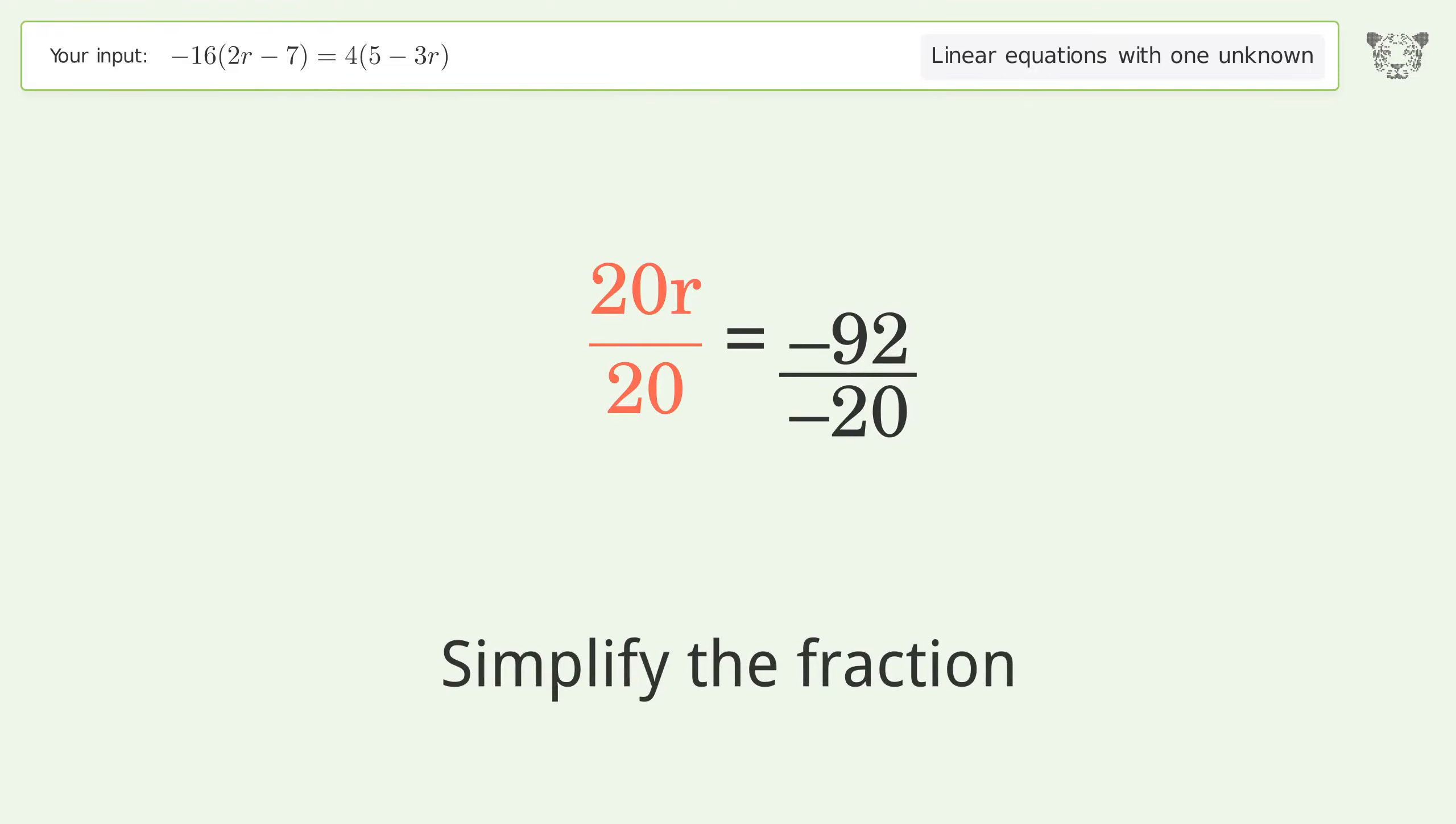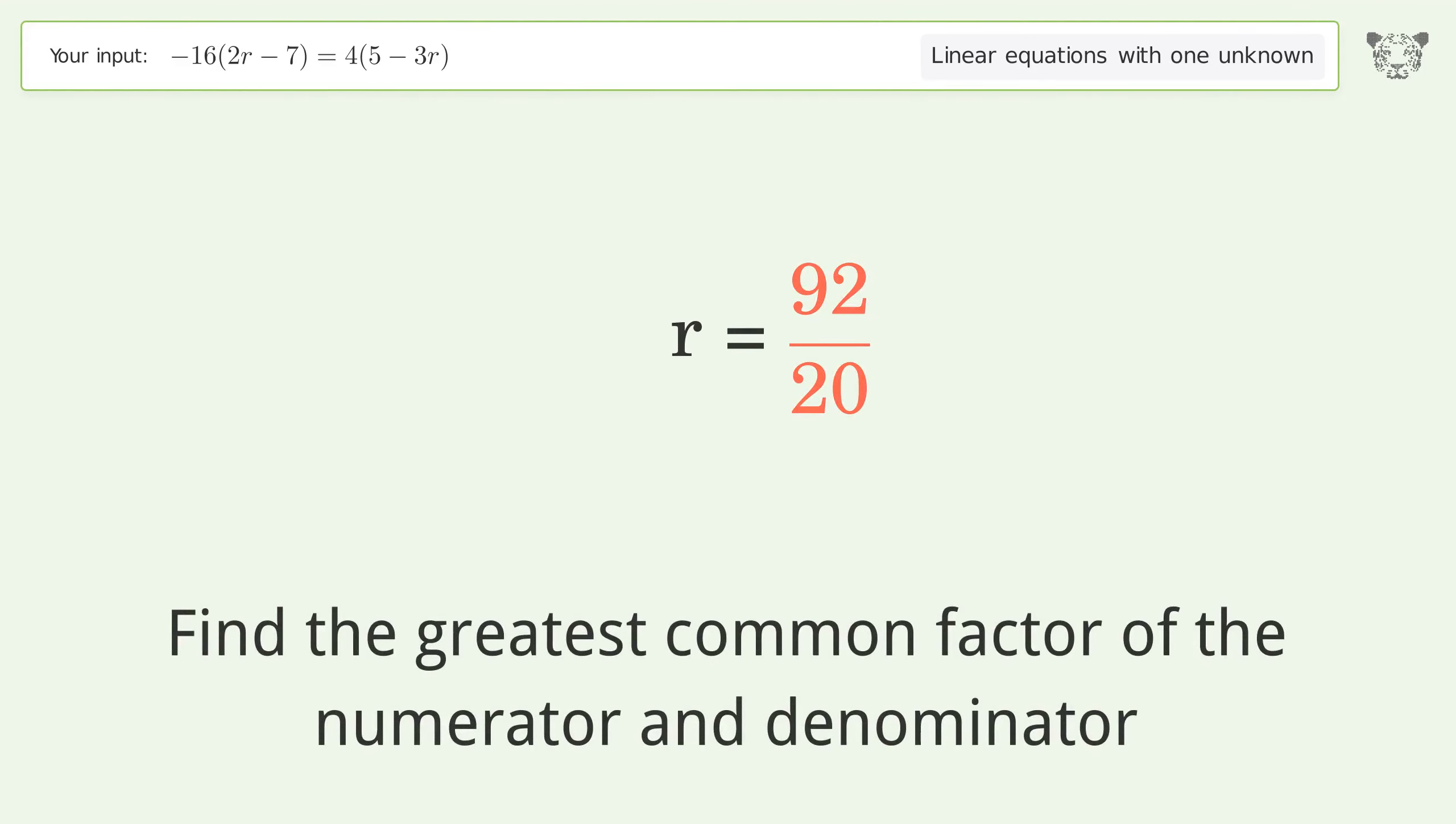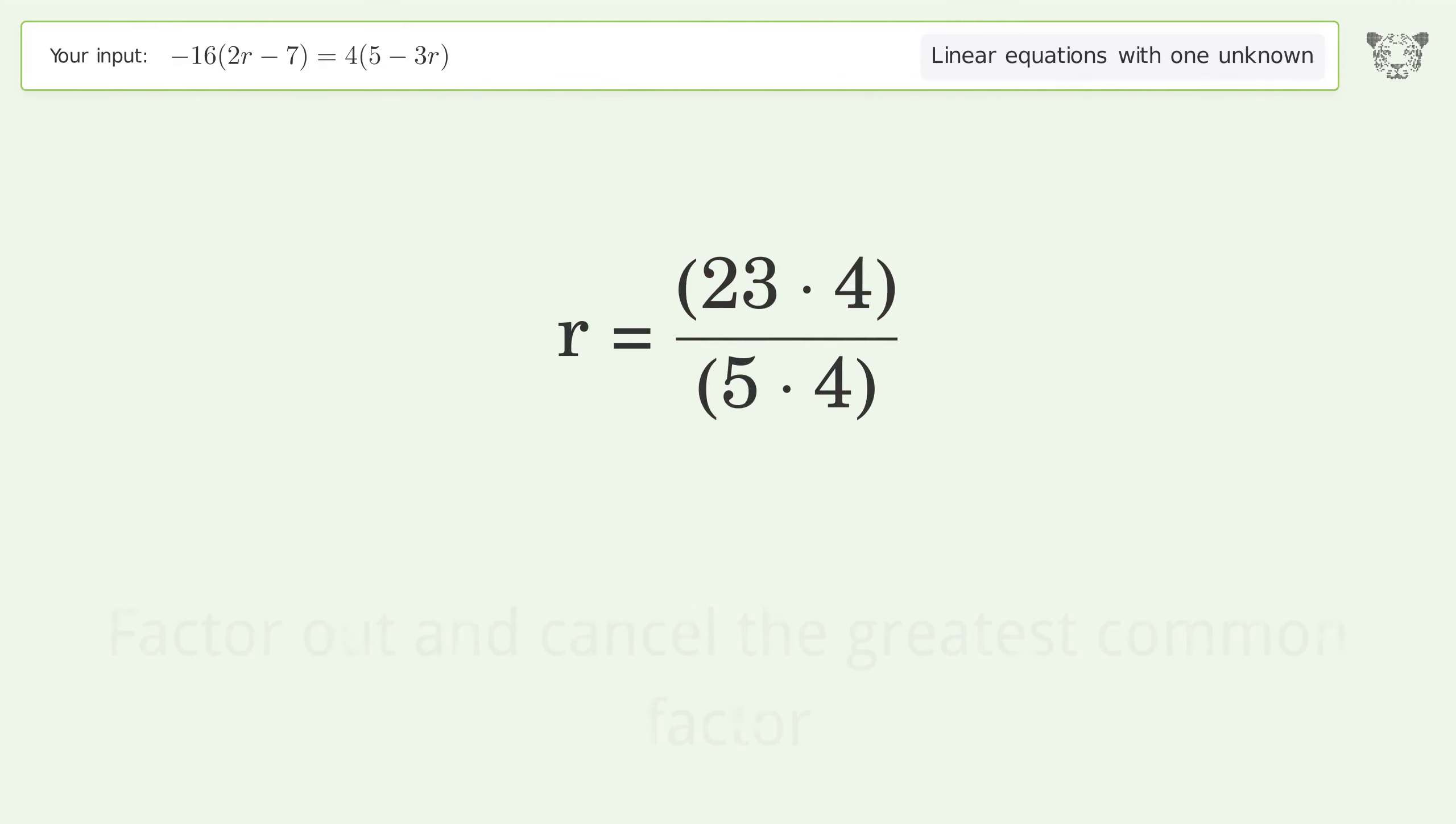Simplify the fraction and cancel out the negatives. Find the greatest common factor of the numerator and denominator. Factor out and cancel the greatest common factor.